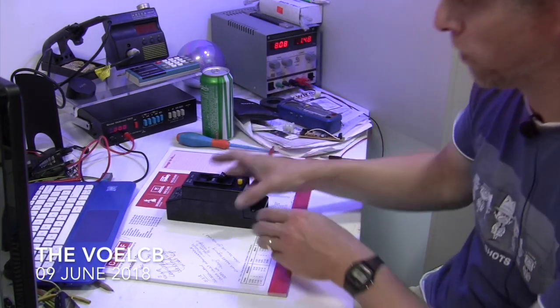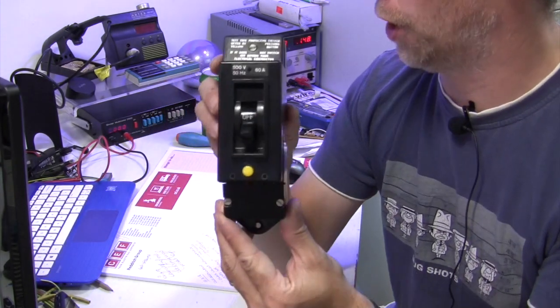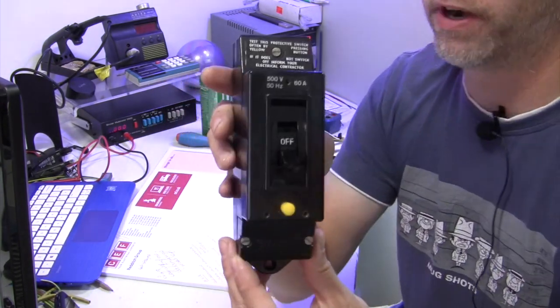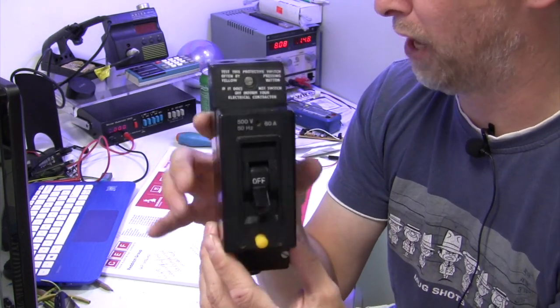Hello, it's David from David Savory Electrical Services Limited and look what I'm playing with today. It's a Voltage Operated Earth Leakage Circuit Breaker, or a VOELCB to use a clumsy and somewhat unpronounceable acronym.